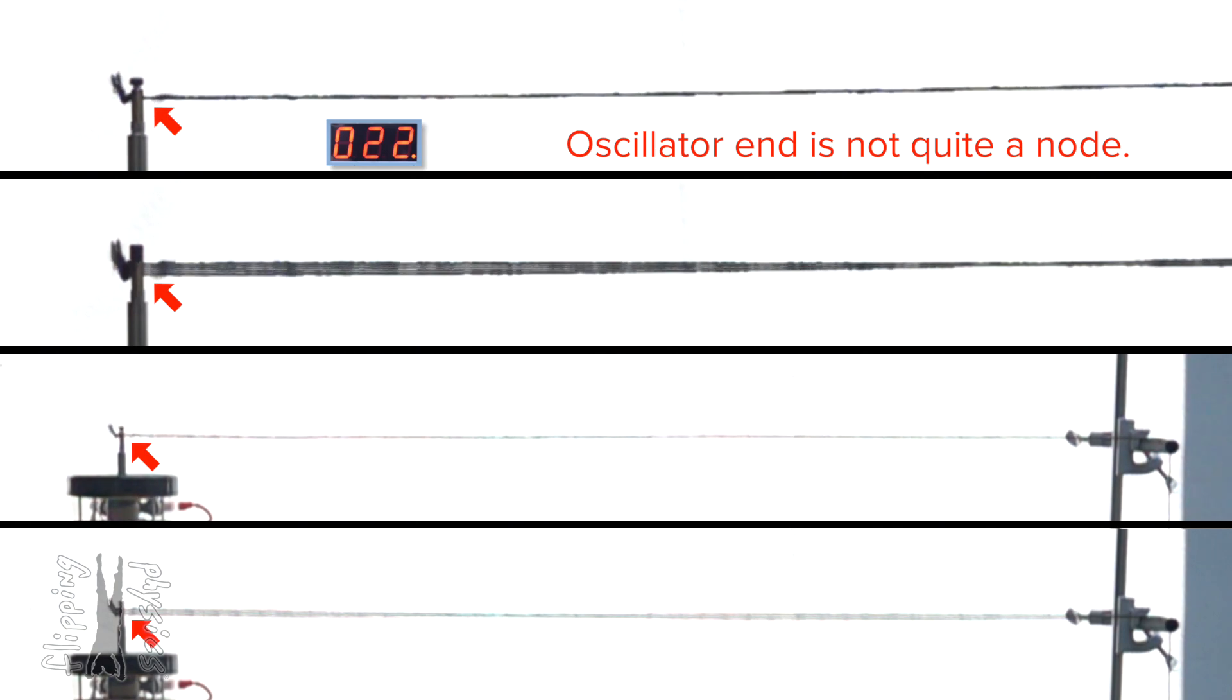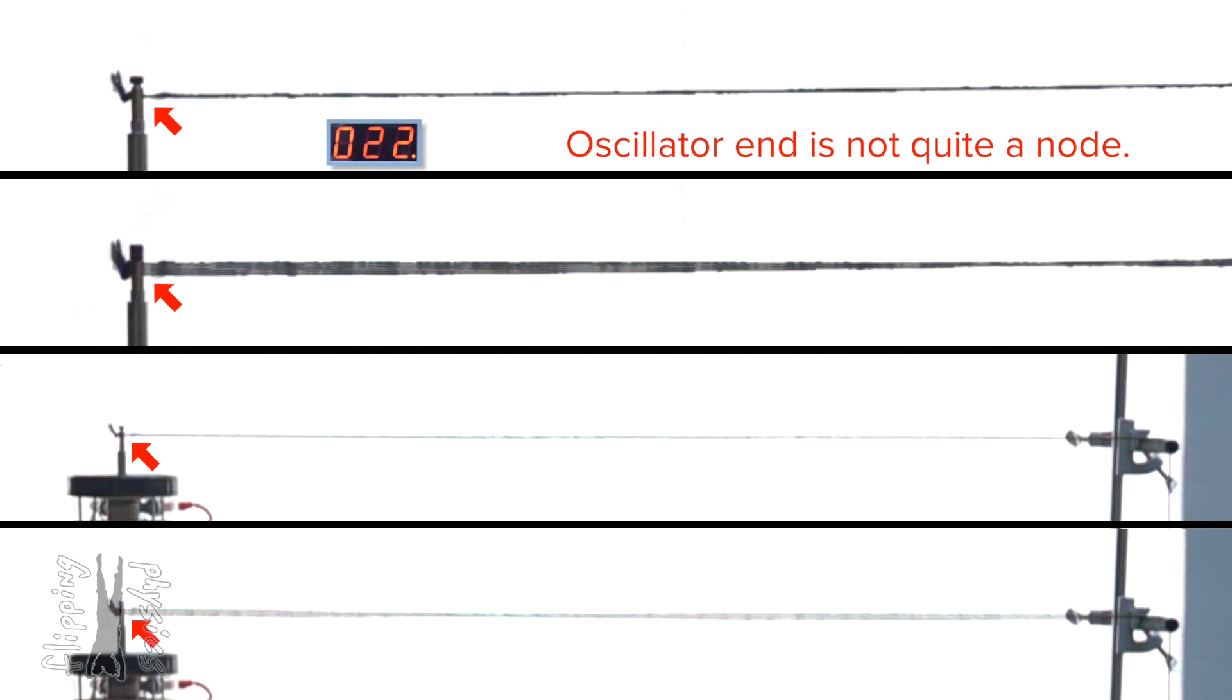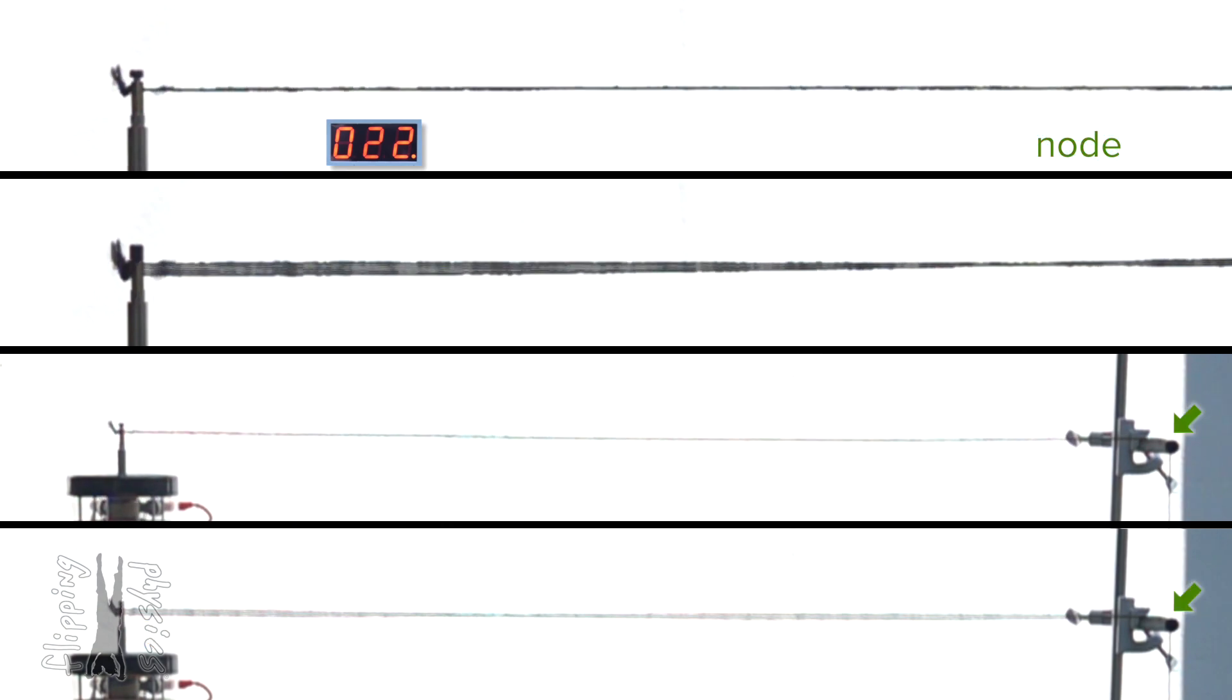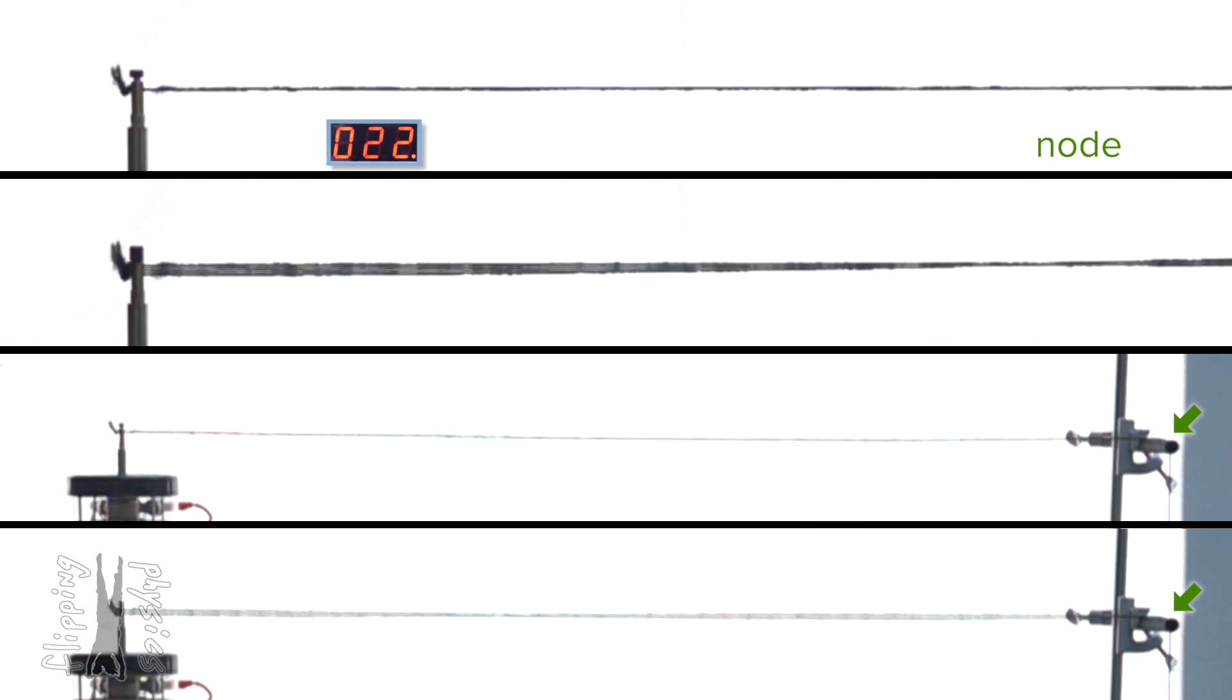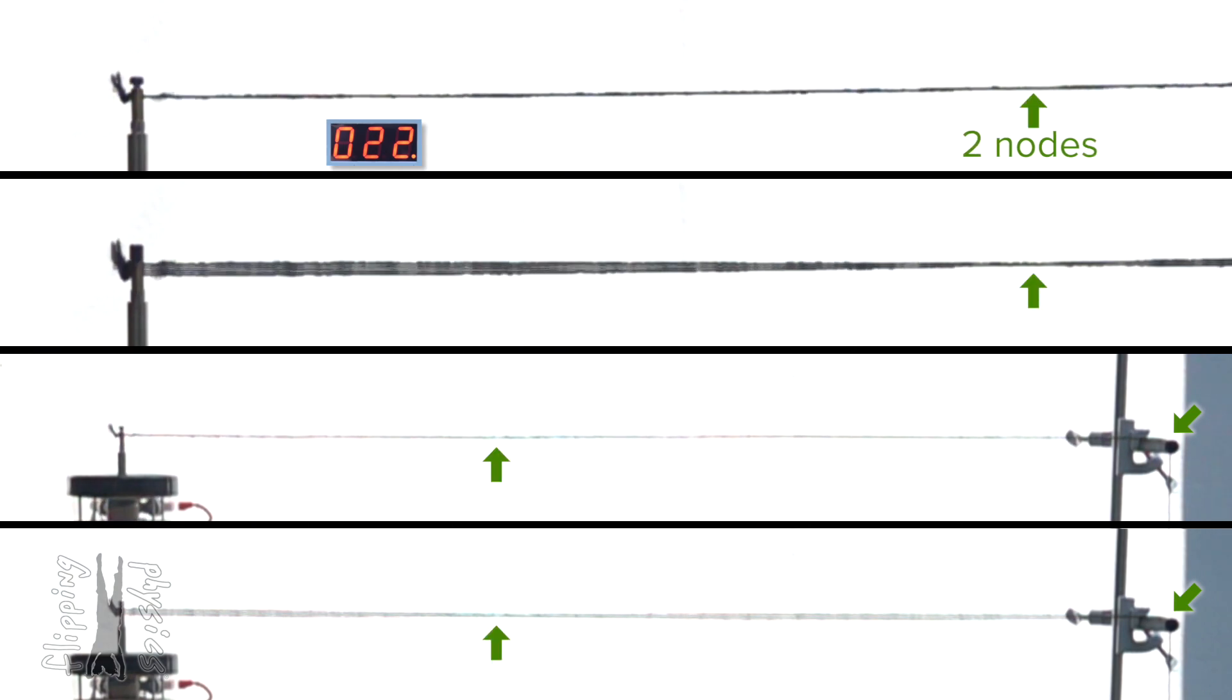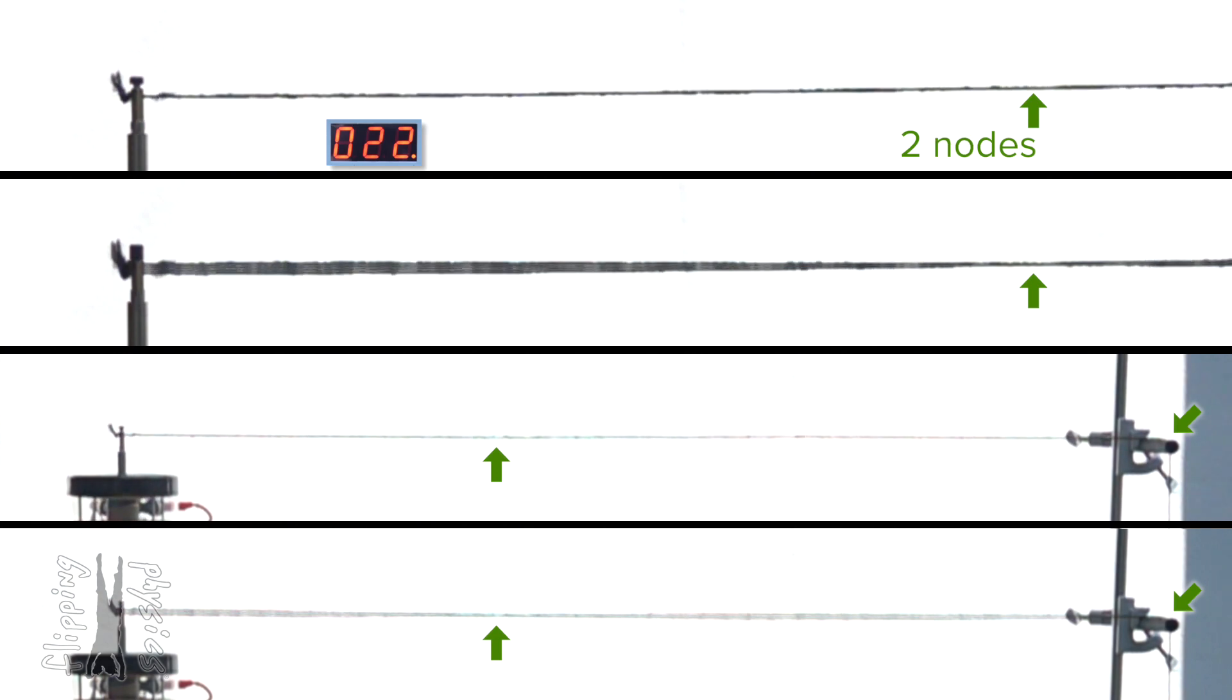Billy, how many nodes are in this standing wave pattern? How many nodes? So, how many locations have total destructive interference? Well, the right end is a node because it really is fixed in place. And it looks like there is one other node a little more than a third of the length of the string to the right of the oscillator. Correct. There are two nodes in the standing wave pattern at 22 hertz.